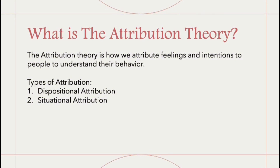Although he didn't dive too deep into the process of attribution, he did define two types of attribution that are still commonly discussed in attribution theory today. These are dispositional attribution and situational attribution. Dispositional or internal attribution happens when somebody believes that a person's behavior is driven by internal factors. For example, a person might cry in the subway because they're emotionally unstable at the moment or they cry easily — either way, it's due to internal factors.